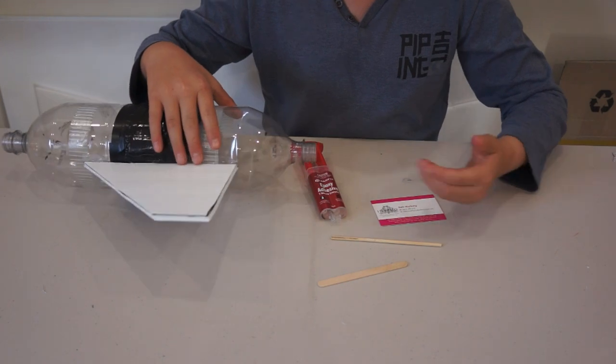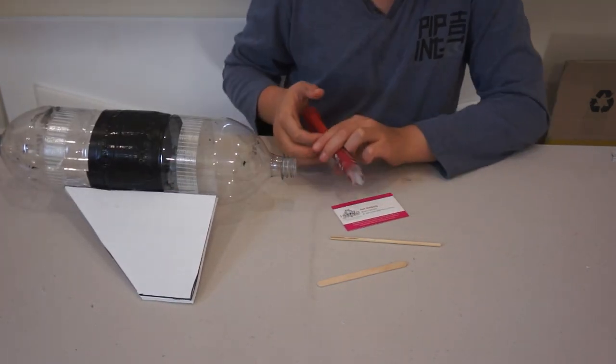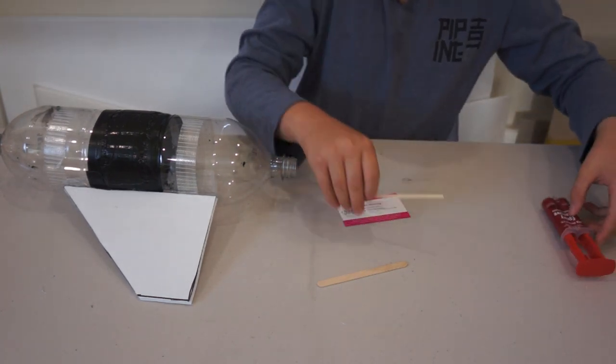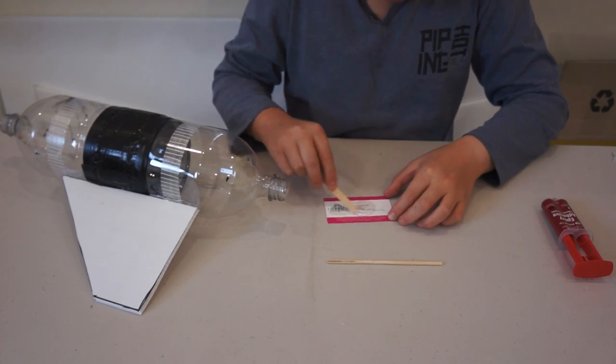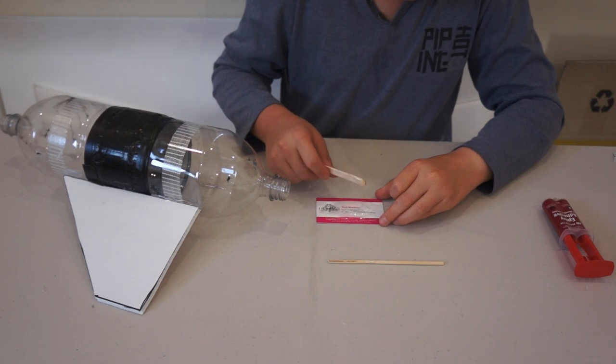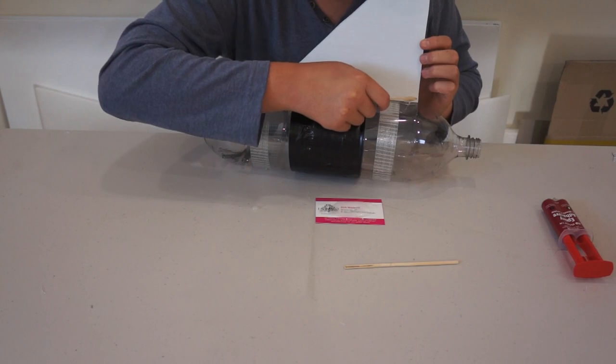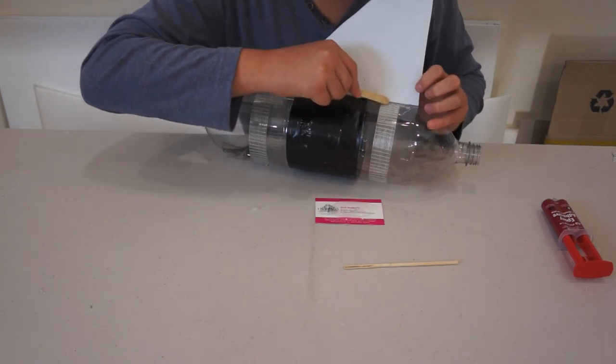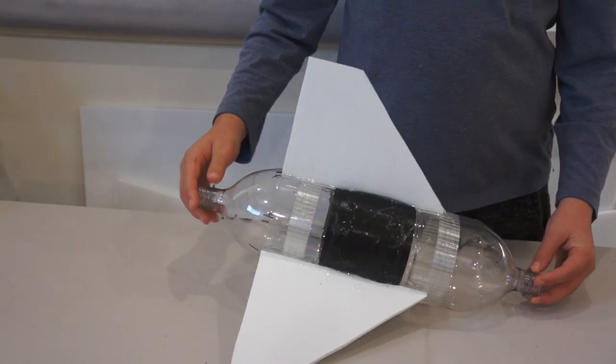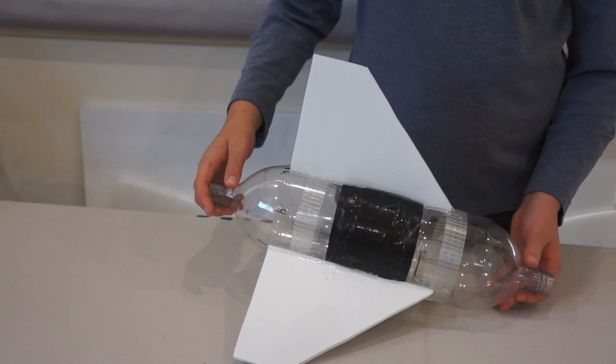Now that the glue has dried on the fin, I just mix up a bit of epoxy and I apply the epoxy just to the sides of the fins. Okay. So now I've put some epoxy along the sides of the fins, and now that that's dry, you can just get some tape.